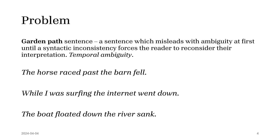They call it a temporal ambiguity because at first it's ambiguous. You read it as 'the horse raced past the barn,' then 'the barn fell,' and that doesn't fit syntactically, so you have to find an alternate reading. It's a syntactic ambiguity that clarifies itself at the end. Examples include: 'The horse raced past the barn fell,' 'While I was surfing the internet went down,' and 'The boat floated down the river sank.'